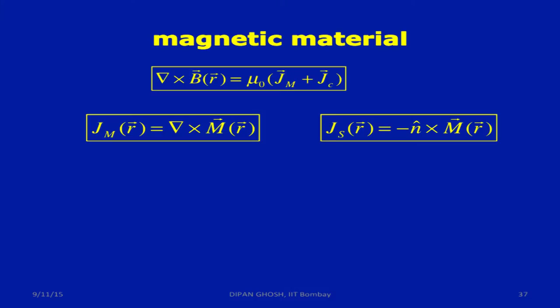Just the way we had seen that the polarization gives rise to a volume charge density and a surface density, we had said that del dot of P was something and P dot N was something. Here it turns out an identical expression is valid.